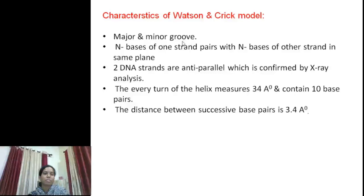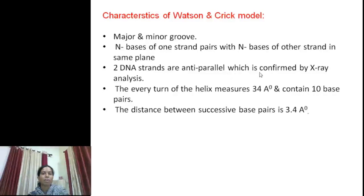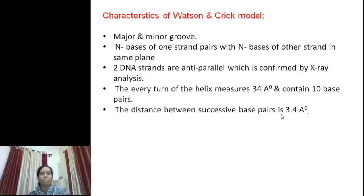Because of the helix formation, there are two grooves: major and minor. The nitrogen bases of one strand pair with the nitrogen bases of the other strand in the same plane. Two strands of DNA are said to be antiparallel because the 5' end of one strand is on the same side as the 3' end of the other strand. Every turn of the helix measures 34 Å, and in each turn, 10 base pairs are present, so the distance between successive base pairs is 3.4 Å.